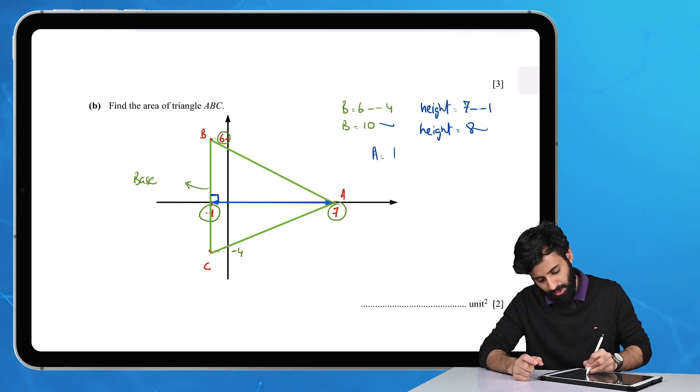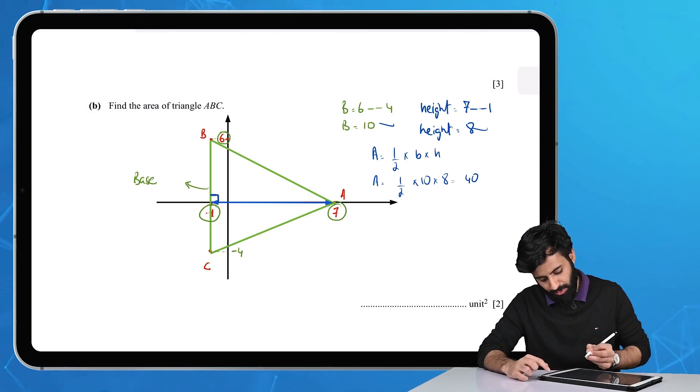Half times 10 times 8. 10 times 8 is 80, 80 upon 2 is 40. So that means 40 square units.